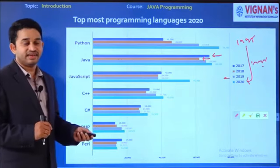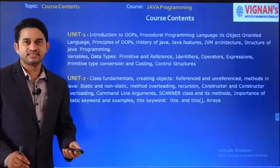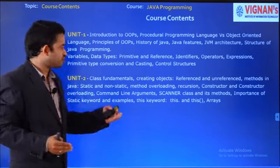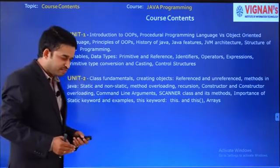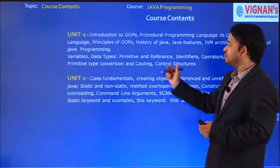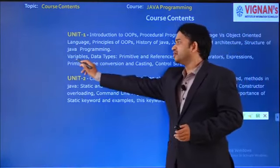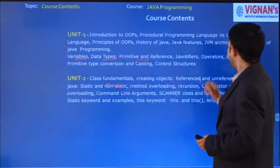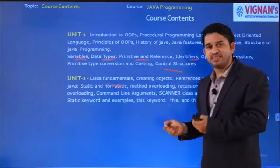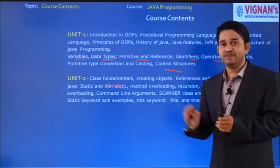Next, let's go through the entire course contents. This course is divided into multiple units. In unit one, I am going to explain the basic fundamentals used in Java programming language — all the concepts we learned in first-year C programming, like variables, data types, primitive types, identifiers, operators, and control structures — but explained in Java with a different syntactical manner.